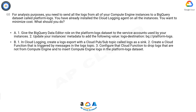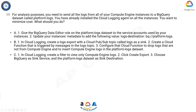Option B: 1. In Cloud Logging, create a logs export with a Cloud Pub/Sub topic called logs as a sink. 2. Create a Cloud Function that is triggered by messages in the logs topic. 3. Configure that Cloud Function to drop logs that are not from Compute Engine, and to insert Compute Engine logs into the Platform Logs dataset.